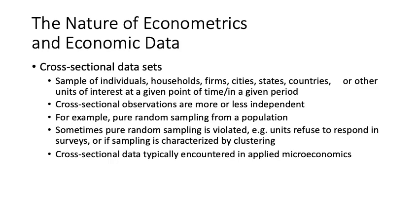Sometimes pure random sampling is violated — for example, when units refuse to respond in surveys, or when sampling is characterized by clustering. Cross-sectional data is typically encountered in applied microeconomics, which concerns individual units like consumers or producers.